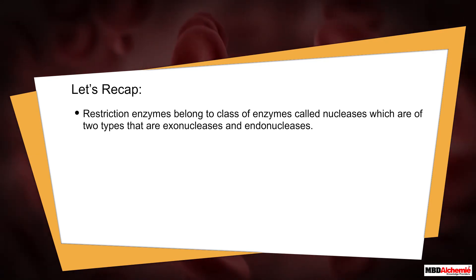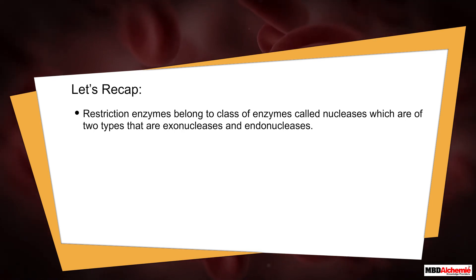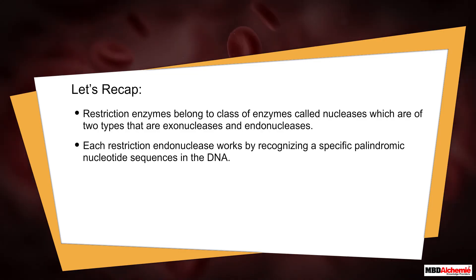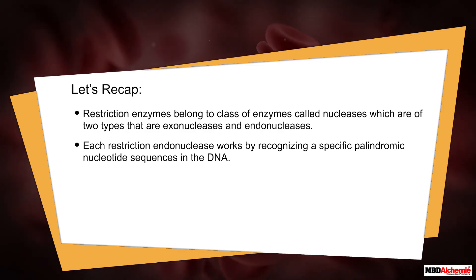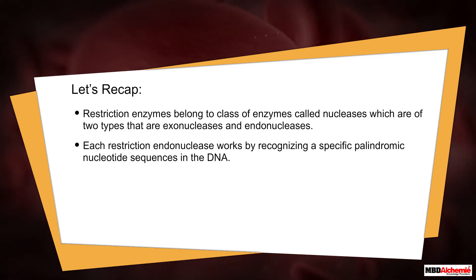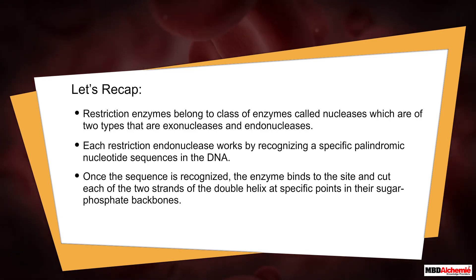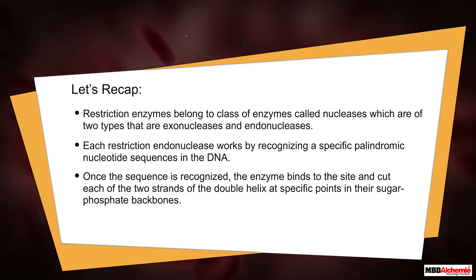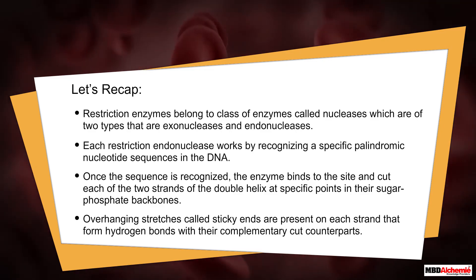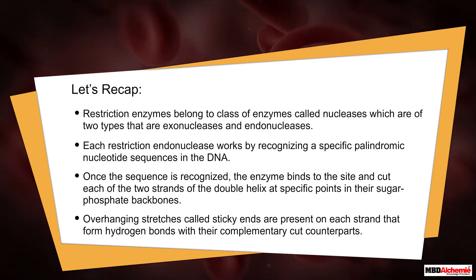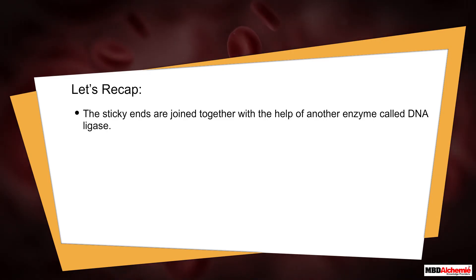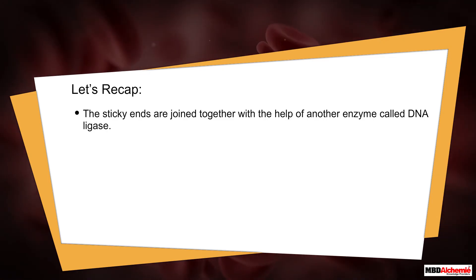Restriction enzymes belong to a class of enzymes called nucleases, which are of two types: exonucleases and endonucleases. Each restriction endonuclease works by recognizing a specific palindromic nucleotide sequence in the DNA. Once the sequence is recognized, the enzyme binds to the site and cuts each of the two strands of the double helix at specific points in their sugar-phosphate backbones. Overhanging stretches called sticky ends are present on each strand, forming hydrogen bonds with their complementary cut counterparts. The sticky ends are joined together with the help of another enzyme called DNA ligase.